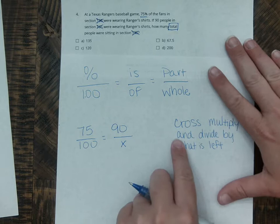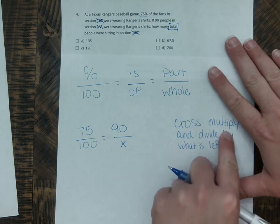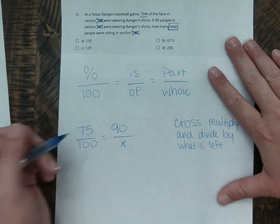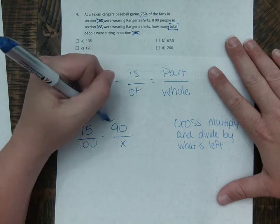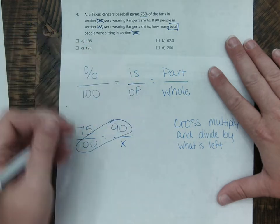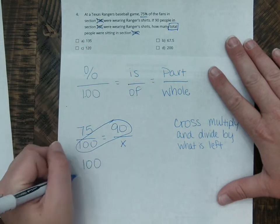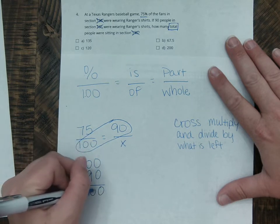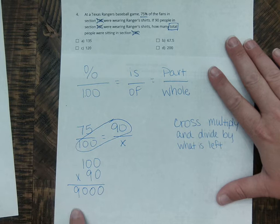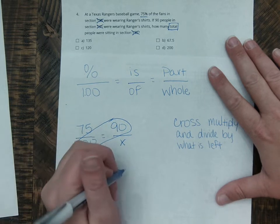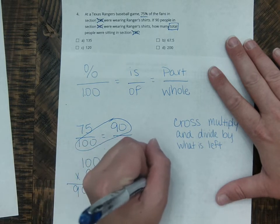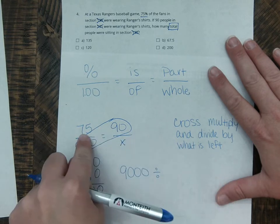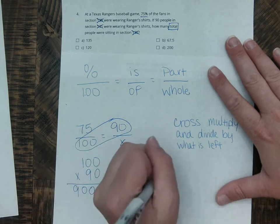And then the way we solve proportions are we cross multiply. I can say 75 times X, but that doesn't help me. So I'm going to do 90 times 100. So 90 times 100 equals, and we know this is 0, 0, 0, 9. So that's 9,000. So then we have 9,000 divided by what is left. What number was left over here? 75.